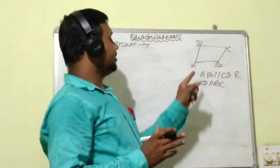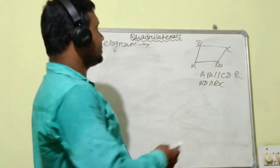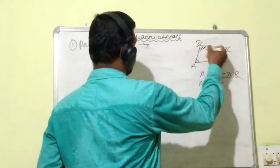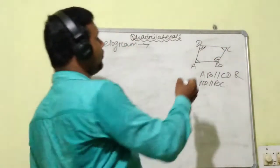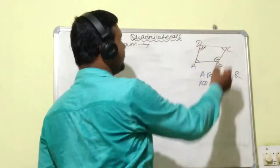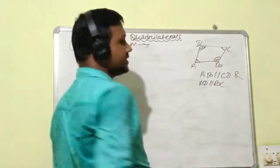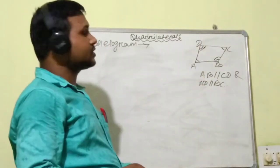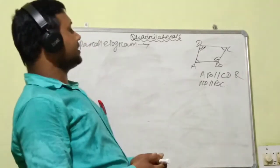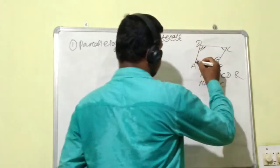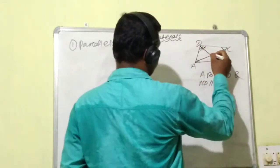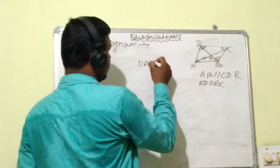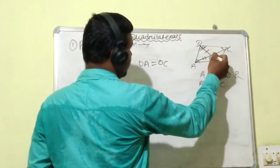The properties of a parallelogram: First, the opposite angles are equal — angle A equals angle C, and angle B equals angle D. Second, the opposite sides are equal — AD equals BC and AB equals DC. Third, the sum of two adjacent angles is supplementary. Fourth, the two diagonals AC and BD bisect each other — if they bisect at O, then OA equals OC and OD equals OB.